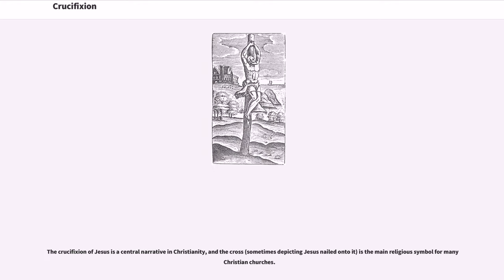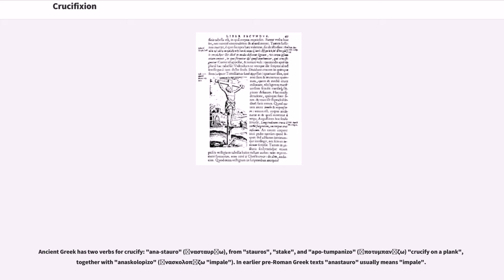The crucifixion of Jesus is a central narrative in Christianity, and the cross, sometimes depicting Jesus nailed onto it, is the main religious symbol for many Christian churches. Ancient Greek has two verbs for crucify: anastauroō, from stauros meaning stake, and apotumpanizō, meaning crucify on a plank, together with anaskolopizō, meaning impale.